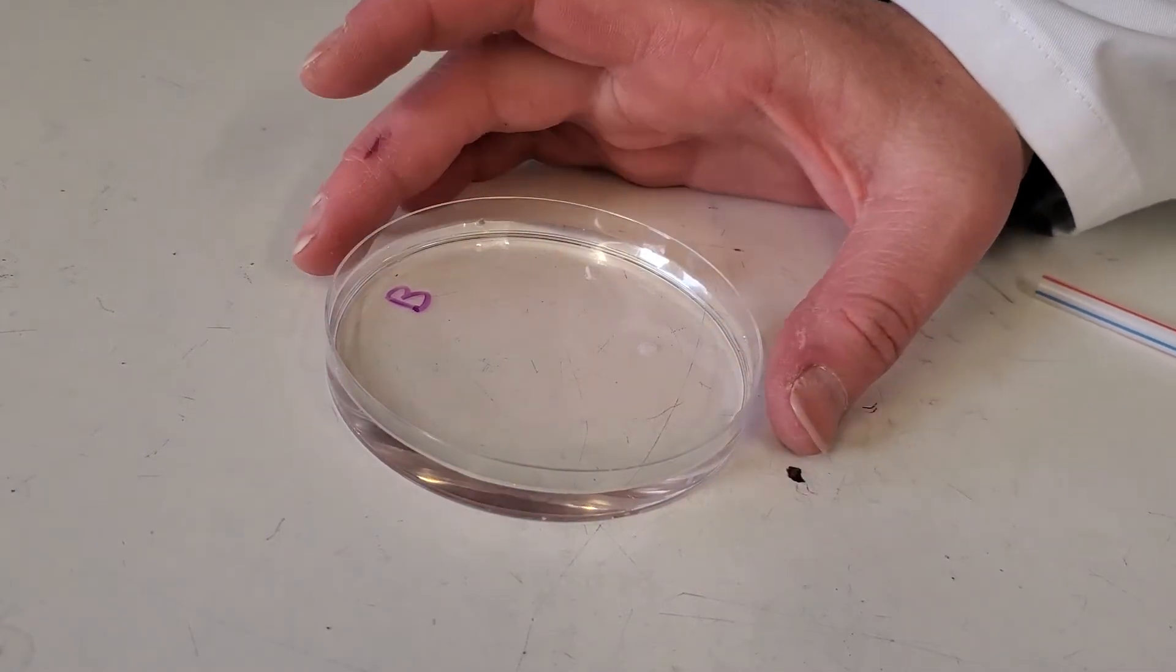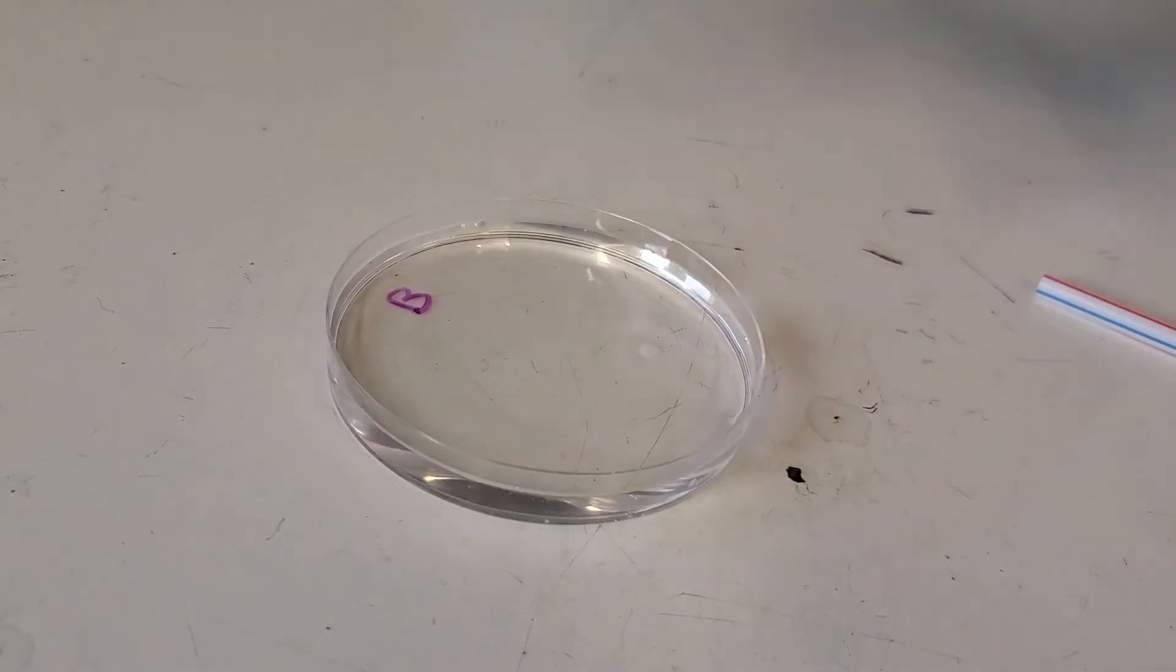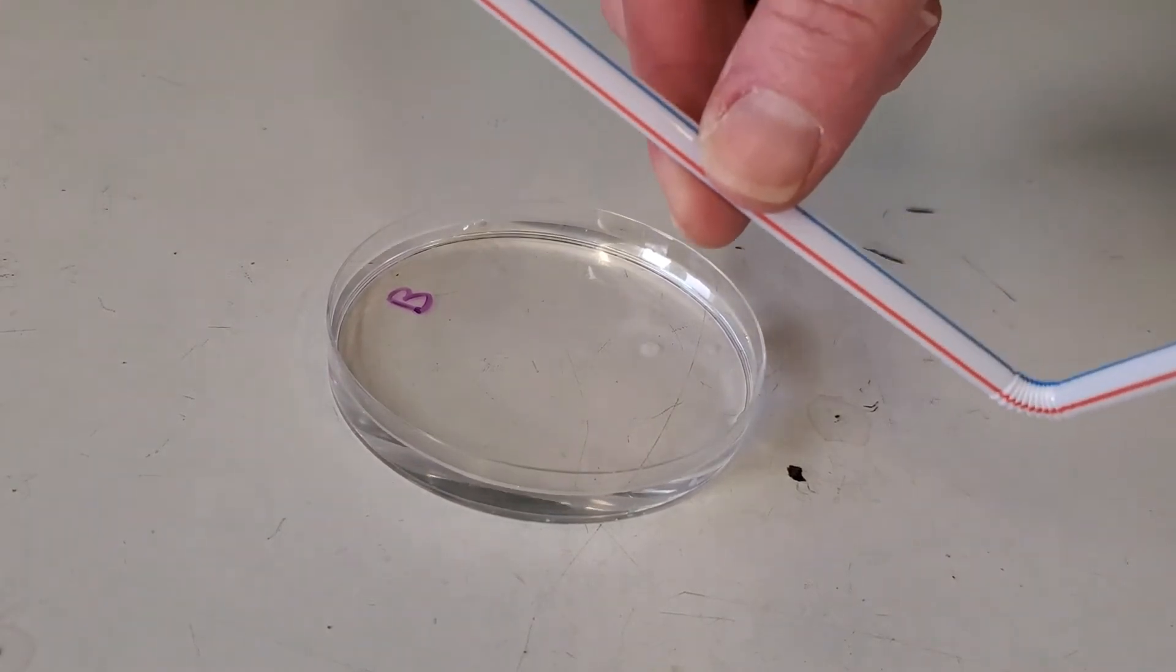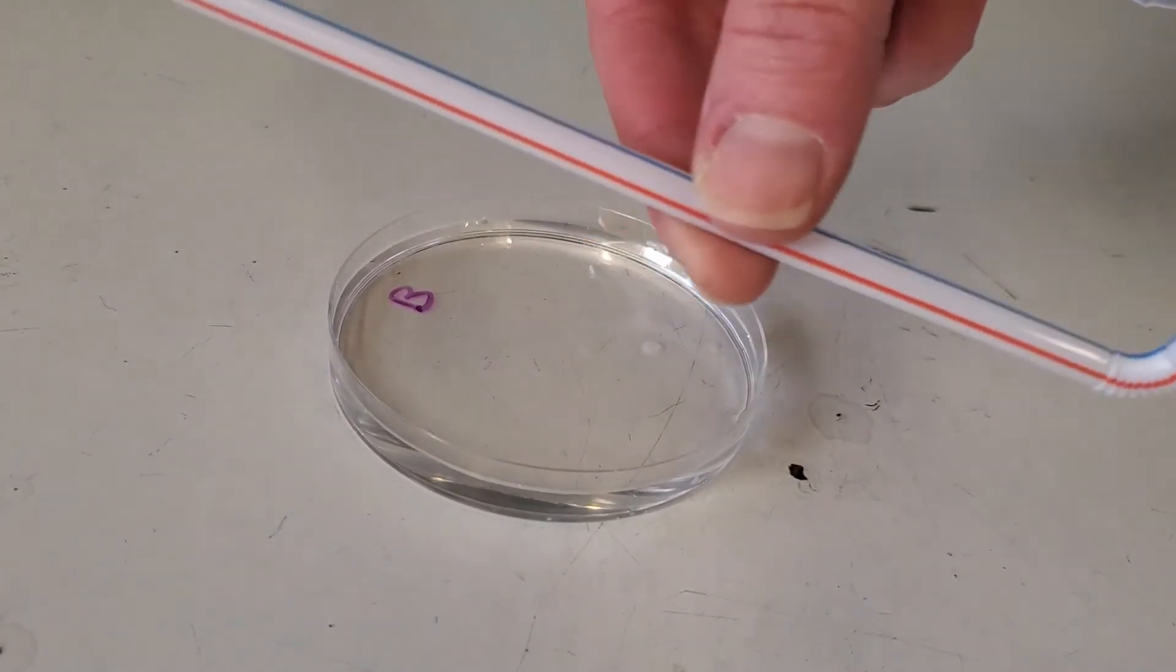We have half of a petri dish, and it's filled just with regular tap water. We have a wind device, also known as a straw.